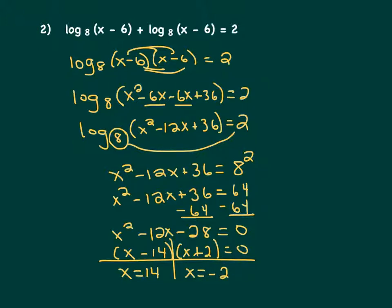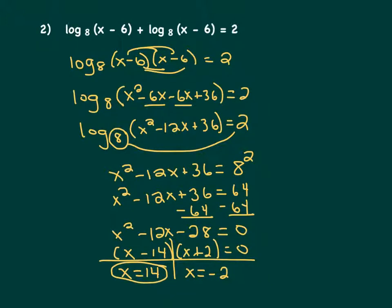You always want to go back and make sure that when you substitute your values of x into the original equation, it doesn't create a negative log anywhere — we're not allowed to have a negative log or a zero log. If we take x equals 14 and substitute back in, 14 minus 6 is positive 8, so that's okay. If we take x equals negative 2 and substitute back in, negative 2 minus 6 is negative 8 — you can't have a log of a negative number, so this value we're going to have to cross off.